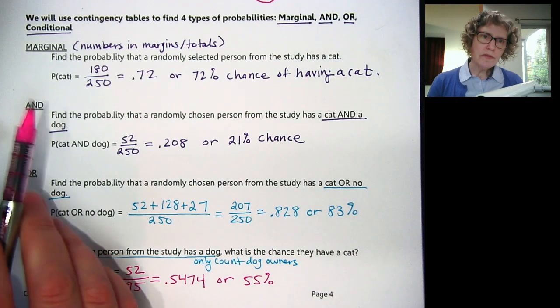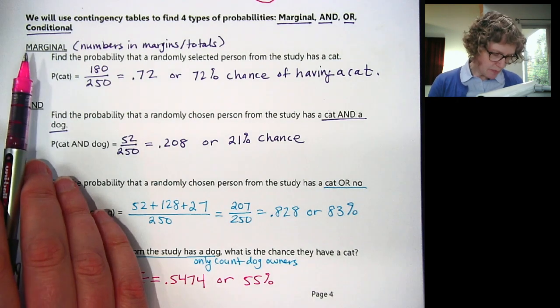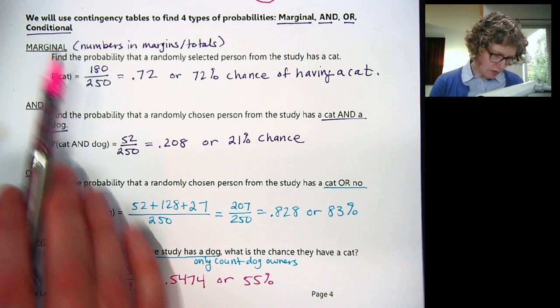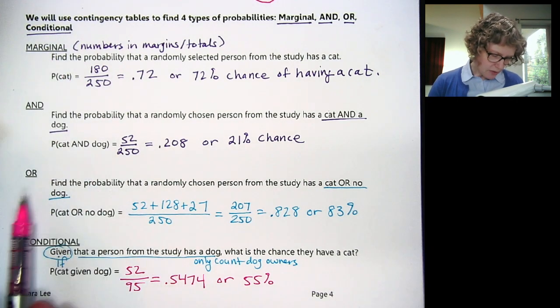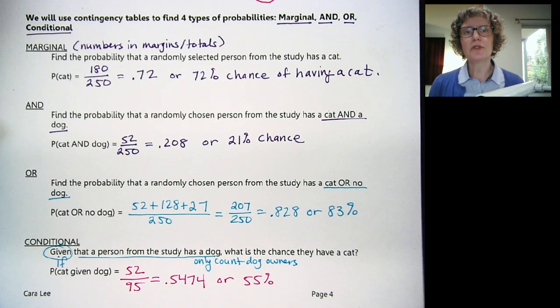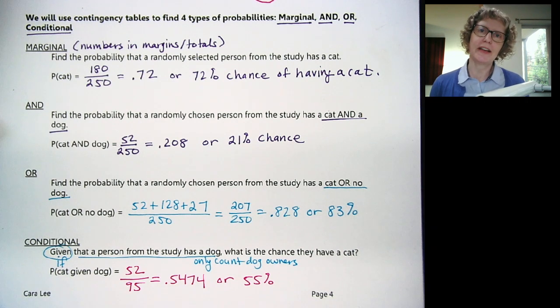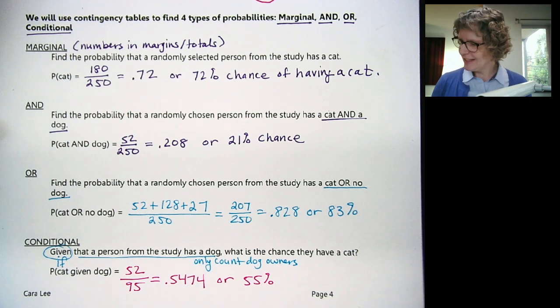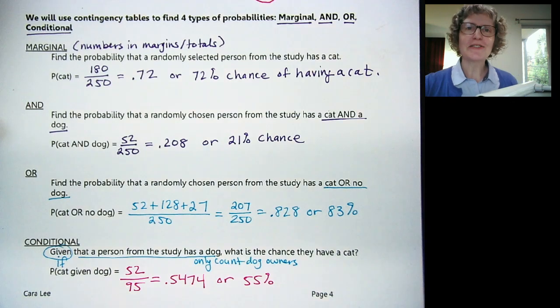Those are the four types of probability we'll be studying: marginal, and, or, and conditional. Thanks a lot for watching. I'll see you in the next one.